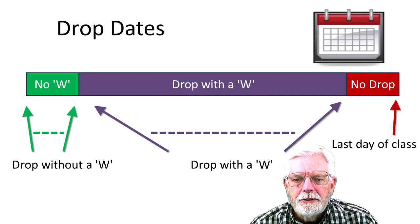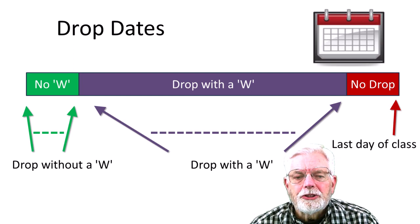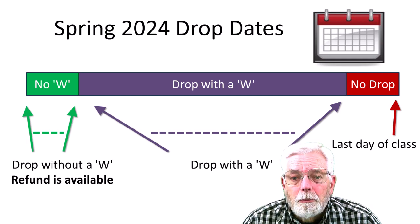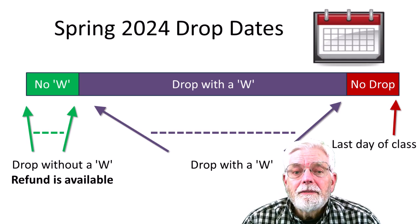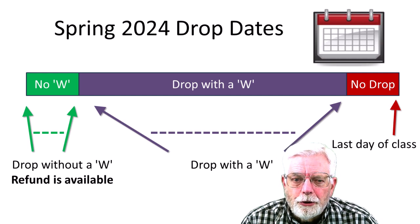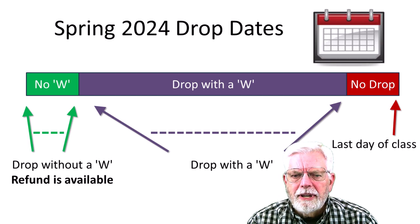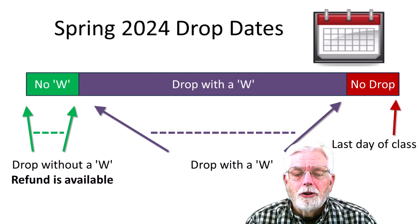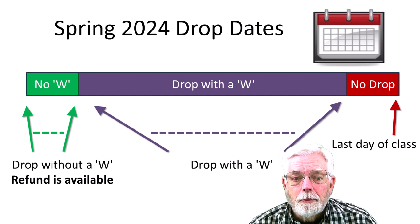If you do not complete the course and do not officially drop through the admissions office and are not dropped by the instructor, you still receive a grade based on your completed work. San Jose City College does not automatically give a refund if you drop a class at the beginning of the semester. You are the one who must apply for the refund before the date to drop with no W. Otherwise, you don't get any money back. It is my understanding that you need to drop by the first drop date to have a refund request approved.